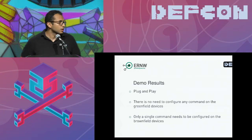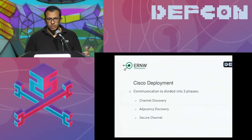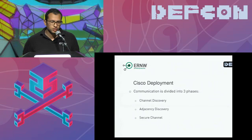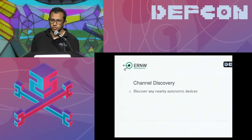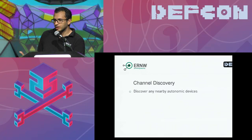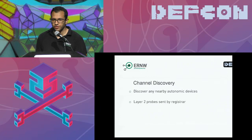To understand the background communication flow, Cisco divided the connection into three phases: channel discovery, adjacency discovery, and secure channel. In channel discovery, devices need to see each other at the layer two level. The register starts sending probes asking 'is there any autonomic device around?' and once it finds a reachable device, it moves to the second phase — adjacency discovery.